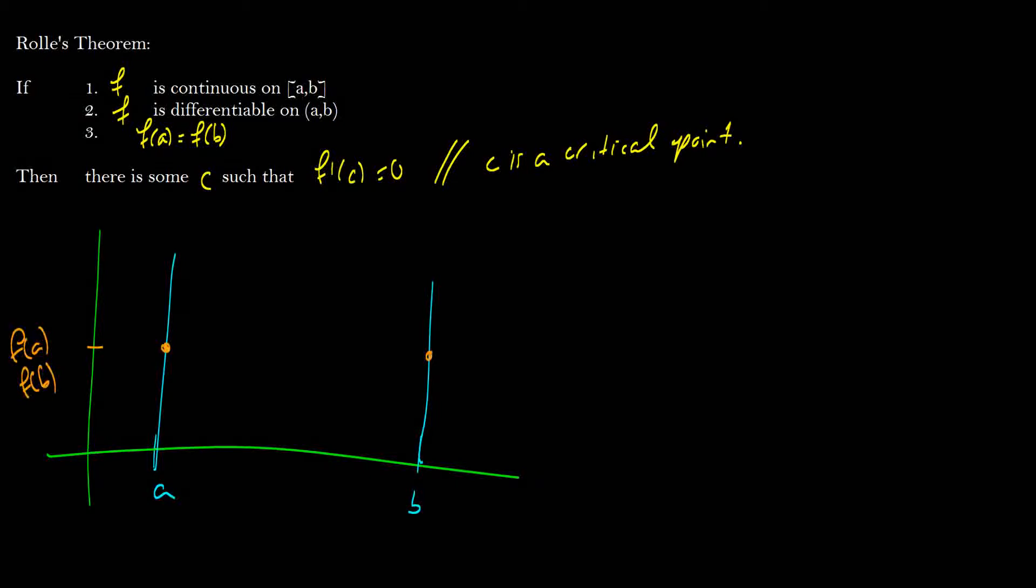So there's many different types of graphs we can have in here. We can have one that looks like that, we can have one that looks like that, we can have one that looks crazy, or we can have one that's absolutely flat. And what this says is that no matter what the graph is, there's going to be some point in there that's either a local maximum or a local minimum.